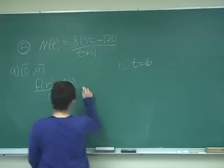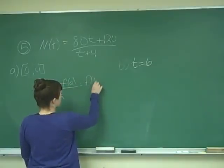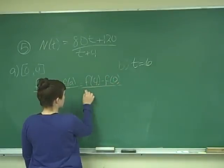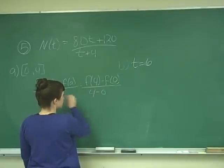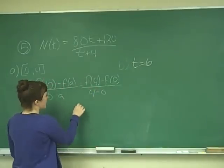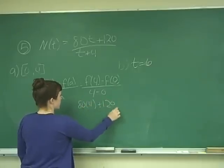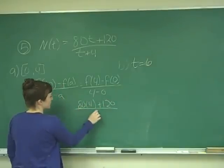So we just need to find F of 4 minus F of 0 all over 4 minus 0. F of 4 is going to be 80 times 4 plus 120 all over 4 plus 4 is 8.